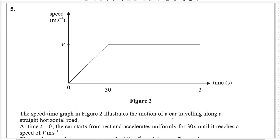Hi there, welcome back to my channel, Mathweb. In this video, I am going to explain question number 5 from the Pearson-Rexell A-level exam for Mechanics 1. This exam was taken in May, session 1 of 2023. The paper reference code is WME01-01.